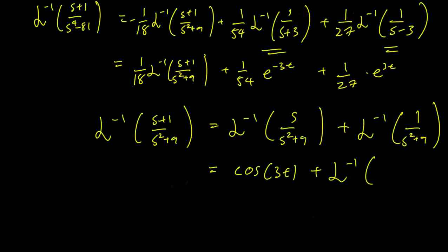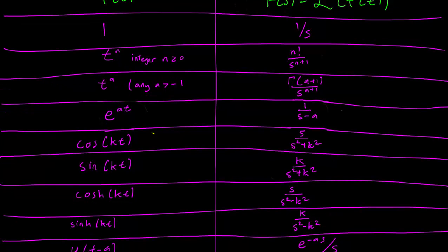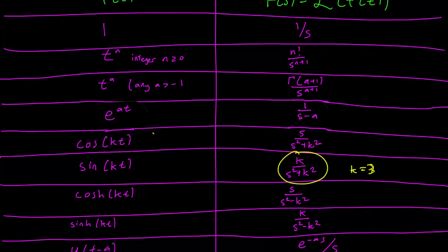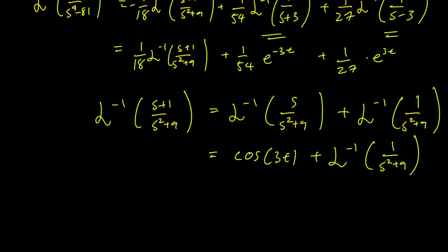But we still have to figure out this other term, 1 over s^2 plus 9. So looking at our table, we have that the best thing would probably have to be k over s^2 plus k^2, again with k equals 3. So this gets us 3 over s^2 plus 9, which is pretty close.